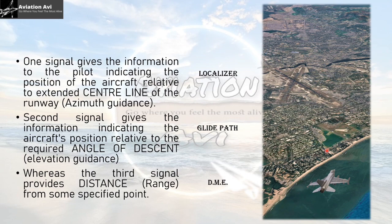The third piece of information is what distance remains to the touchdown point. If we get these three pieces of information correctly, the pilot could easily land the aircraft. One signal gives azimuth guidance — how much left or right the aircraft is from the runway center line — provided by the localizer. The second signal gives the angle of descent guidance — how much above or below the glide path the aircraft is. The third signal provides distance from the aiming point, given by the Distance Measuring Equipment, or DME.